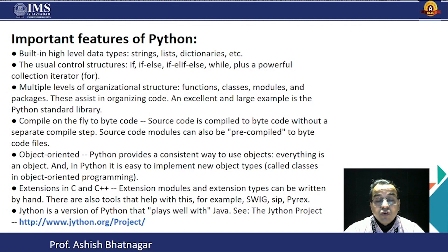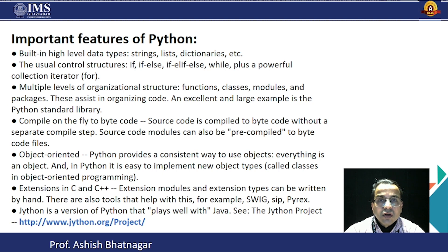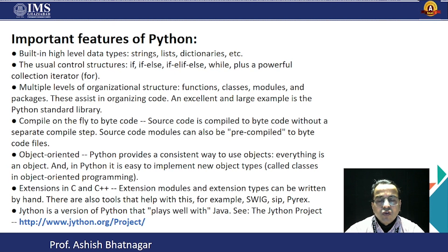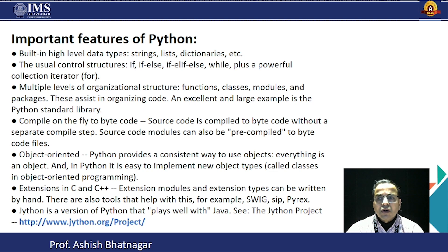Now let's discuss the important features of Python and why its scope is so large compared to other programming languages. The first feature is built-in high-level data types — strings, lists, dictionaries, etc. — because traditional programming languages do not have such strongly defined data types. The second feature is user-controlled structures, meaning Python provides if-else, while loops, for loops, and many other control flow functionalities.